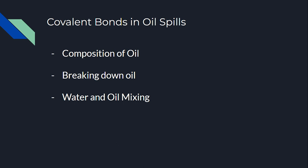Covalent bonds in oil spills relate to the composition of oils and how oils are broken down. Things like dispersants are used to break down these oils. Dispersants are chemical compounds that are applied to surfaces containing oil. Because oil is so nonpolar, dispersants break down oil molecules into smaller parts to make cleanup easier.